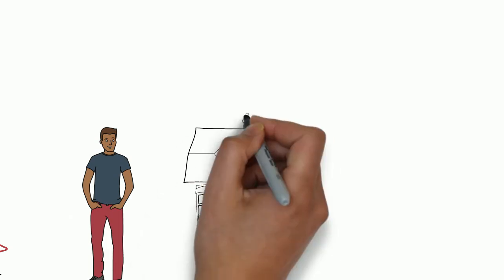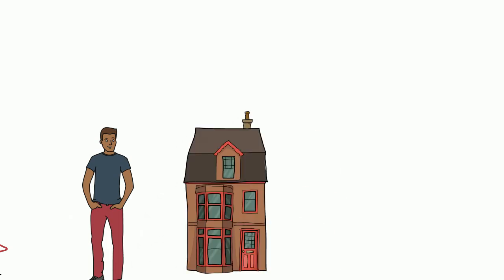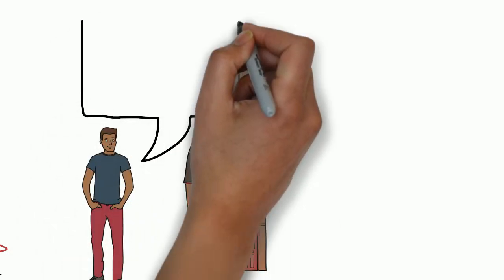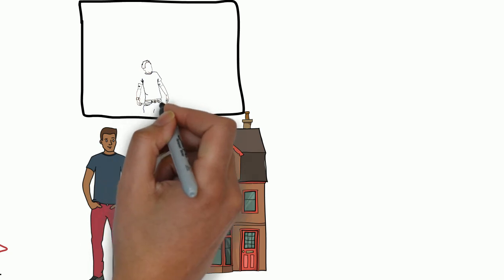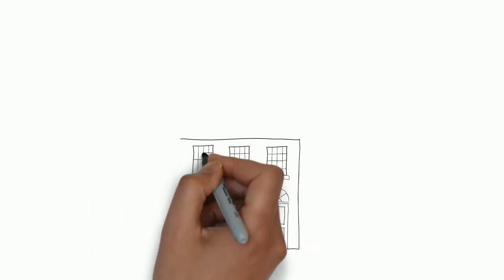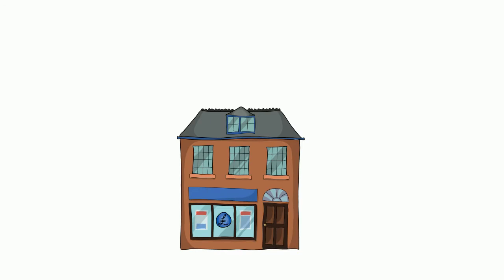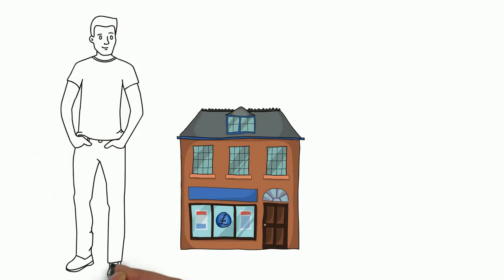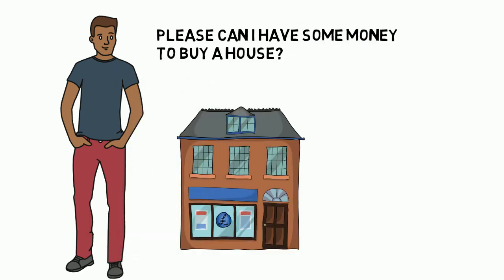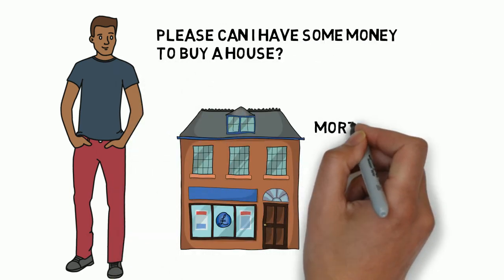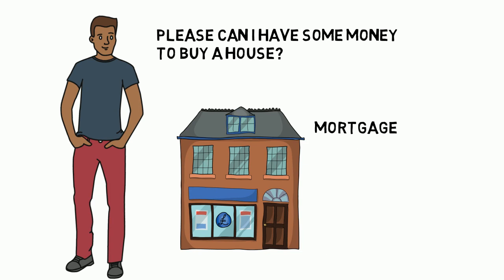Another situation is, of course, say Tom here. He sadly doesn't have any cash, but he would really like to have his own house, so he has to go to the bank. And what does Tom say? Please, can I have some money to buy a house? Yeah, and the money that the bank gives him is a mortgage.